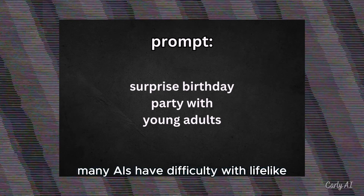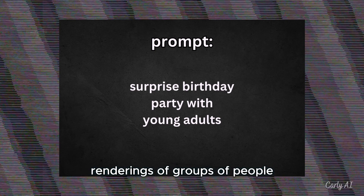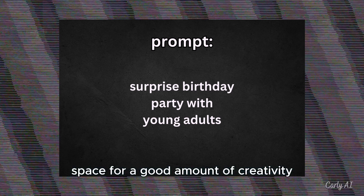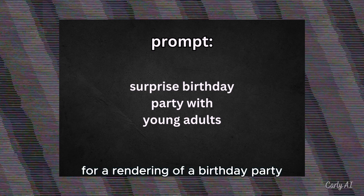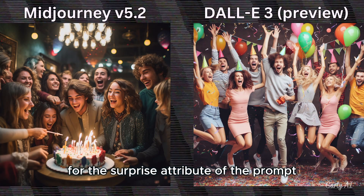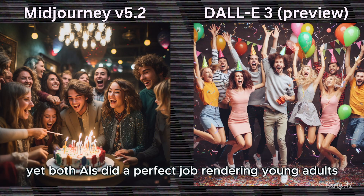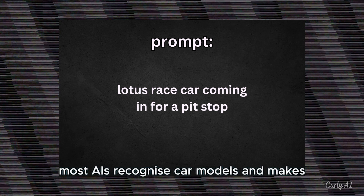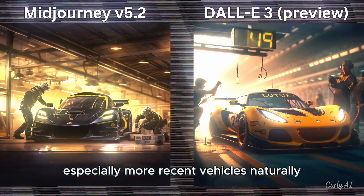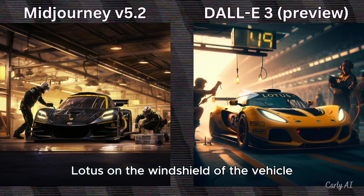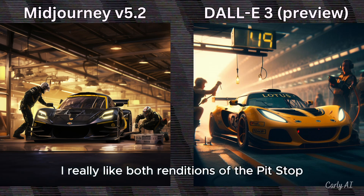Moving back to people, many AIs have difficulty with lifelike renderings of groups of people. In the hope of giving the AIs space for a good amount of creativity, I created this simple prompt for a rendering of a birthday party. I think that DALL-E 3 was right on target for the surprise attribute of the prompt. Yet both AIs did a perfect job rendering young adults. Now we move on to vehicles. Most AIs recognize car models and makes, especially more recent vehicles. Naturally, DALL-E 3 did a great job placing the name Lotus on the windshield of the vehicle. I really liked both renditions of the pit stop.